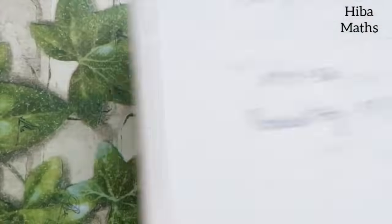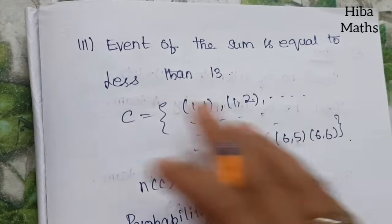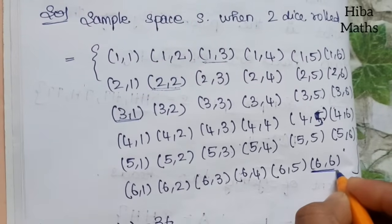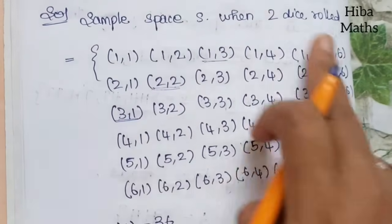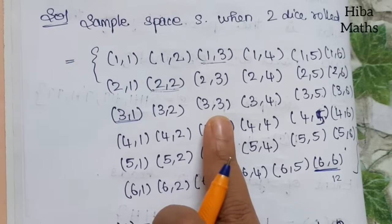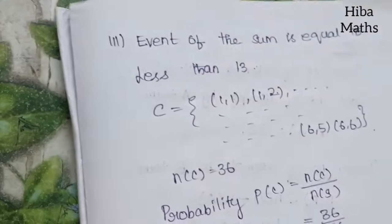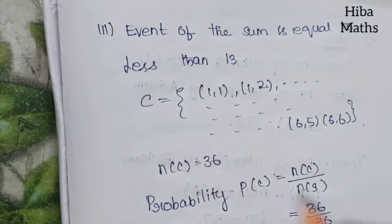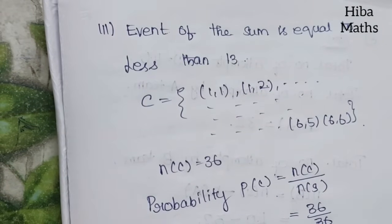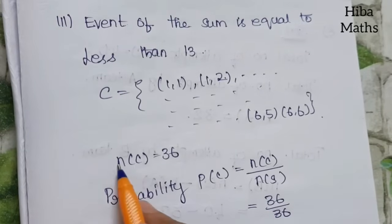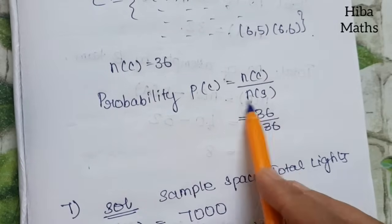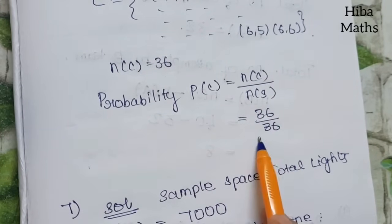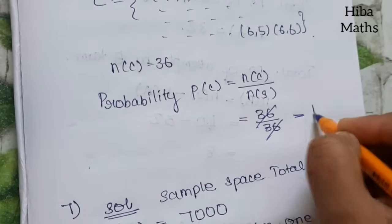Third event: sum less than 13. The maximum sum from two dice is 6+6 equals 12, which is less than 13. So all 36 outcomes satisfy this condition, meaning n of C equals 36. Probability P of C equals 36 by 36 equals 1.